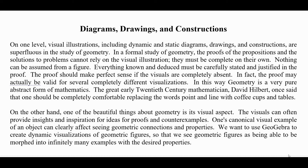On one level, visual illustrations — including dynamic and static diagrams, drawings, and constructions — are superfluous in the study of geometry. In a formal study of geometry, the proofs of propositions and solutions to problems cannot rely on the visual illustration. They must be complete on their own. Nothing can be assumed from a figure. Everything known and deduced must be carefully stated and justified in the proof. The proof should make perfect sense if the visuals are completely absent. In fact, the proof may actually be valid for several completely different visualizations. In this way, geometry is a very pure, abstract form of mathematics.